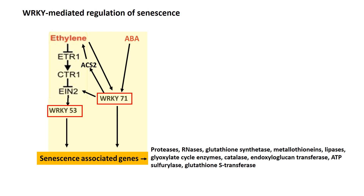WRKY71 expression is also induced by abscisic acid especially in response to abiotic stress like drought, which causes precocious leaf senescence. The senescence-associated genes include protease, RNases, glutathione synthetase, metallothioneins, lipases, glyoxylate cycle enzymes, catalase, endoxyloglucan transferase, ATP sulfurylase, and glutathione transferase, all of which give rise to the senescence phenotype. These genes are expressed during senescence associated with natural aging, seasonal variation, or in response to abiotic and biotic stress.